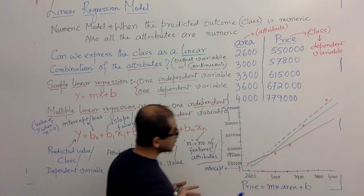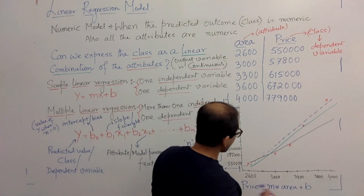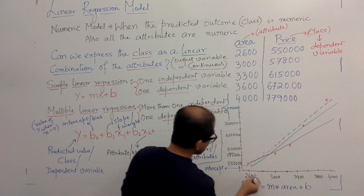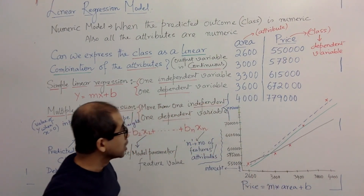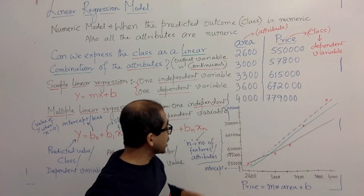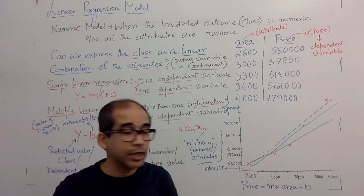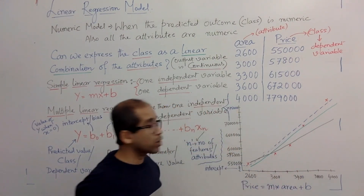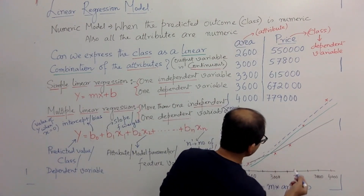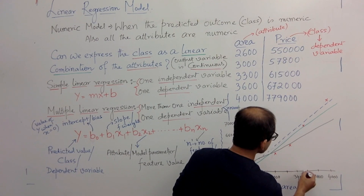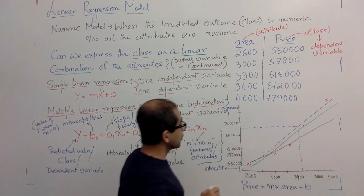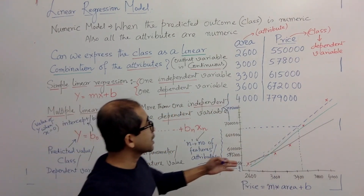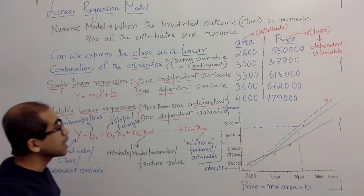The blue dotted line is the line going through the points we've plotted. For 2600 square feet, we plotted those prices for that particular area, and then we are trying to find a line through them. The idea is that if we have that line — the model — we can find the house prices for any arbitrary area. For example, for 3500 square feet, we find the price from the corresponding value on the line. Finding that line is called linear regression modeling.